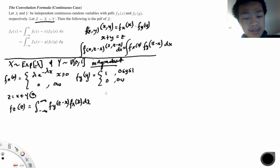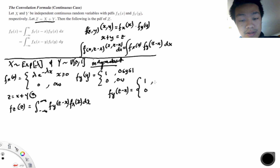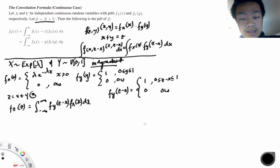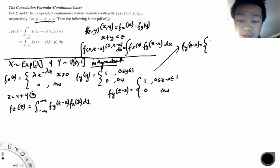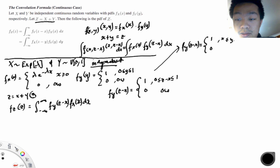The shifted uniform fy(z-x) equals 1 when 0 < z-x < 1, and 0 otherwise. Moving x to the other side gives us the condition: z-1 < x < z, or equivalently x > z-1 and x < z. So that's an interesting constraint that will drive our limits of integration.